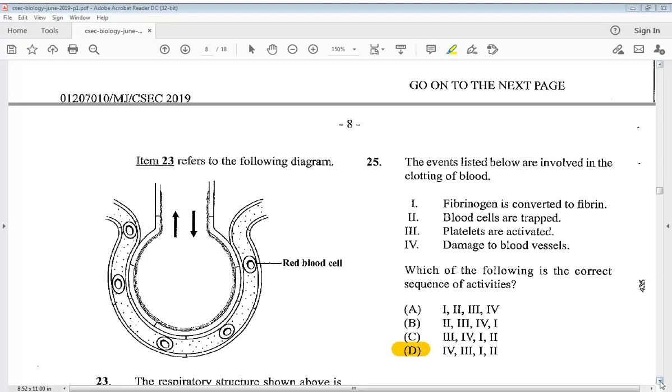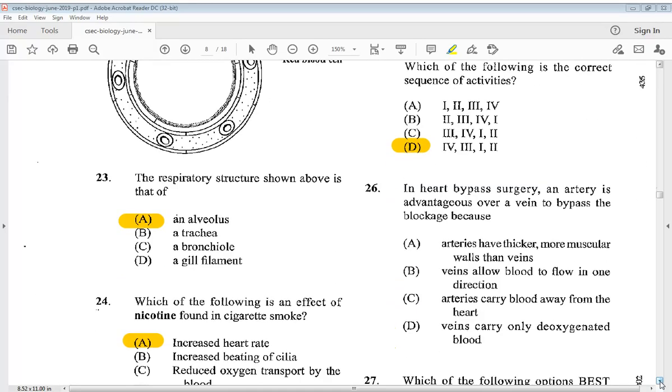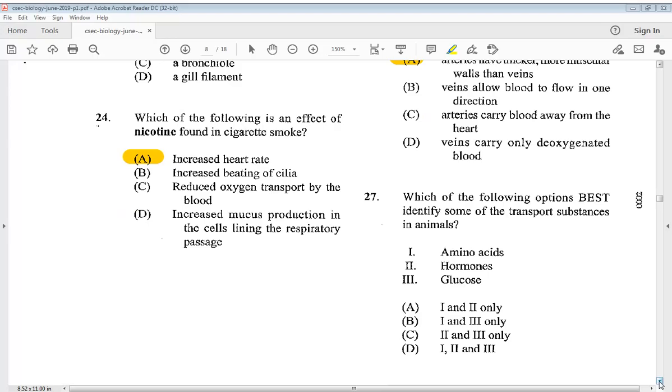Question twenty-six: in heart bypass surgery, an artery is advantageous over a vein to bypass the blockage because A, arteries have thicker more muscular walls than veins. That is the answer. Question twenty-seven: which of the following options best identify some of the transport substances in animals? One, amino acids. Two, hormones. Three, glucose. We know the answer is all of them, one, two, and three. D.